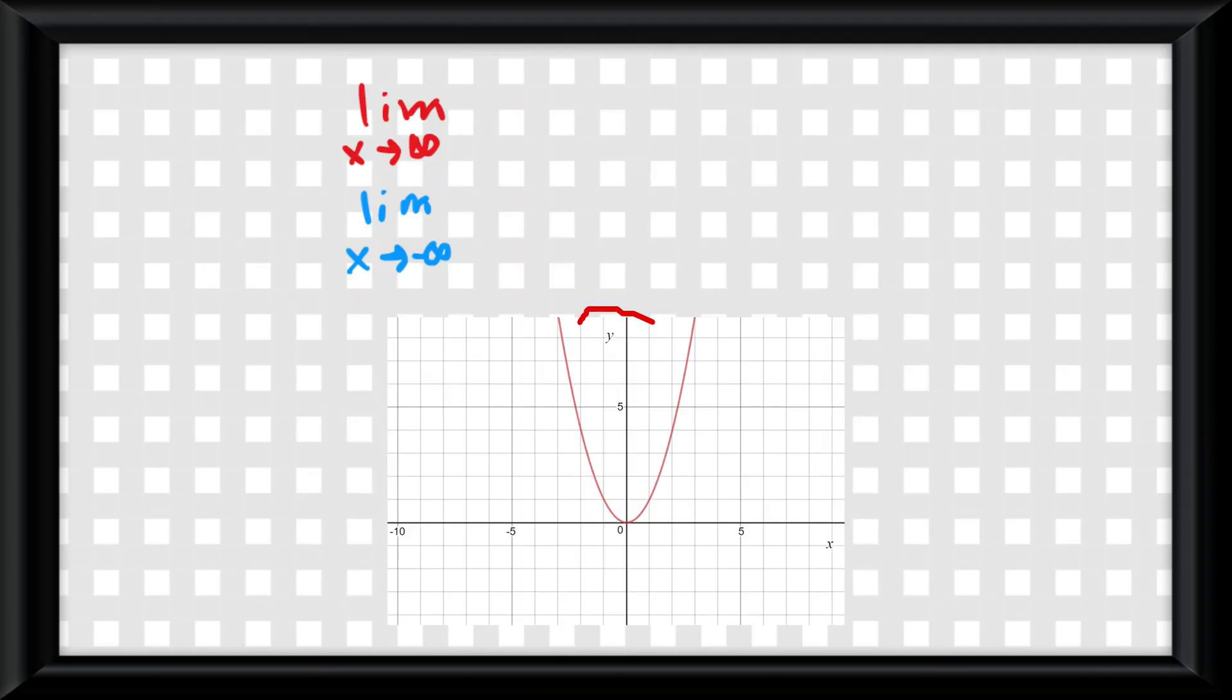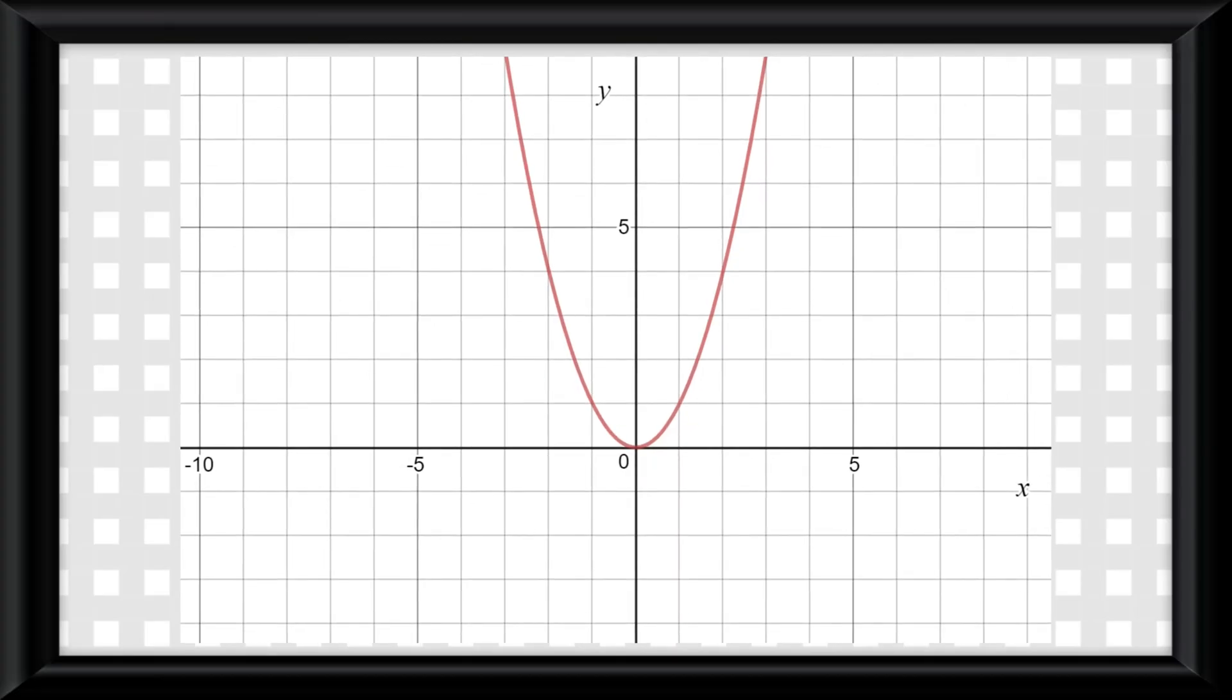Then we need to examine what y is doing when x is doing these things. So we need to write on both of them f of x equals to symbolize that. Now what is f of x or y doing? Let's start with when x approaches infinity. You see that y is also increasing without bound, therefore it is approaching positive infinity.